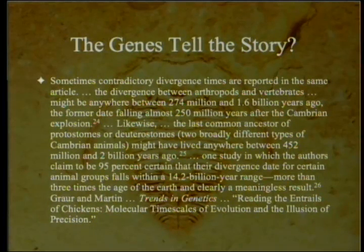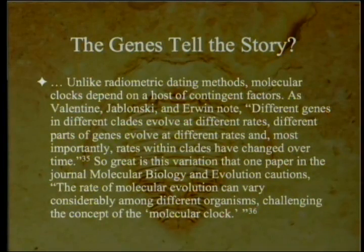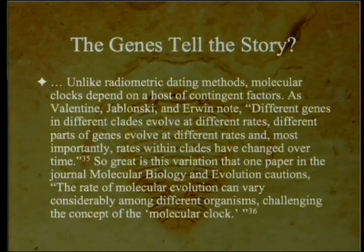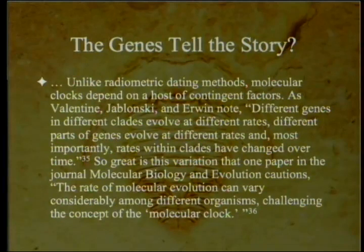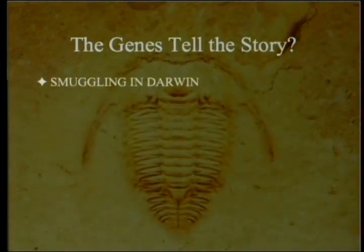Grower and Martin, observing all this, wrote in Trends in Genetics a paper titled 'Reading the Entrails of Chickens: Molecular Time Scales of Evolution and the Illusion of Precision' — the title says it all. Unlike radiometric dating methods, molecular clocks depend on a host of contingent factors. As Valentine, Jablonski, and Irwin note, different genes in different clades evolve at different rates, different parts of genes evolve at different rates, and most importantly, rates within clades have changed over time. One paper in the Journal of Molecular Biology and Evolution cautions: 'The rate of molecular evolution can vary considerably among different organisms, challenging the concept of the molecular clock.'